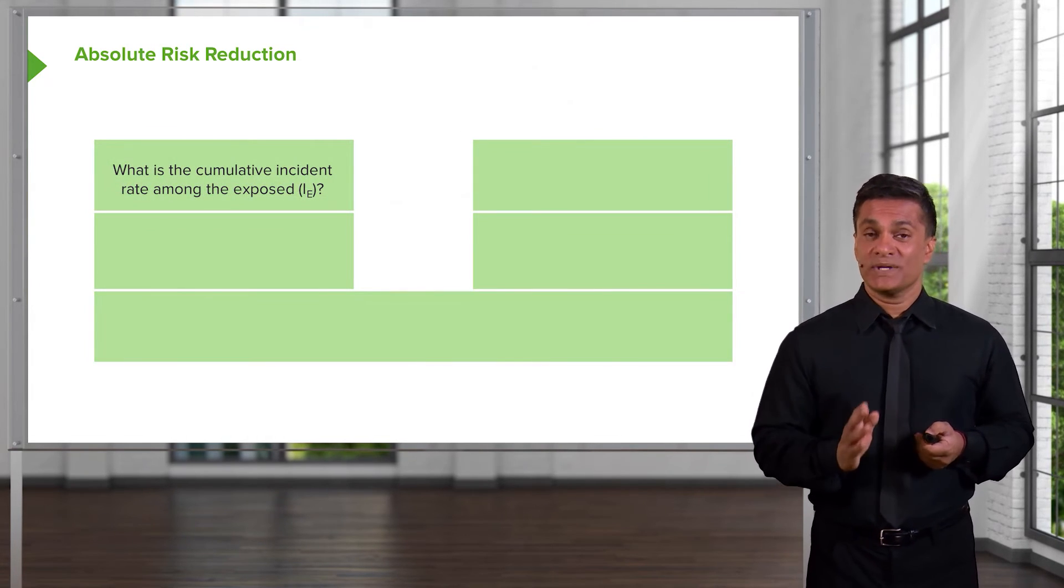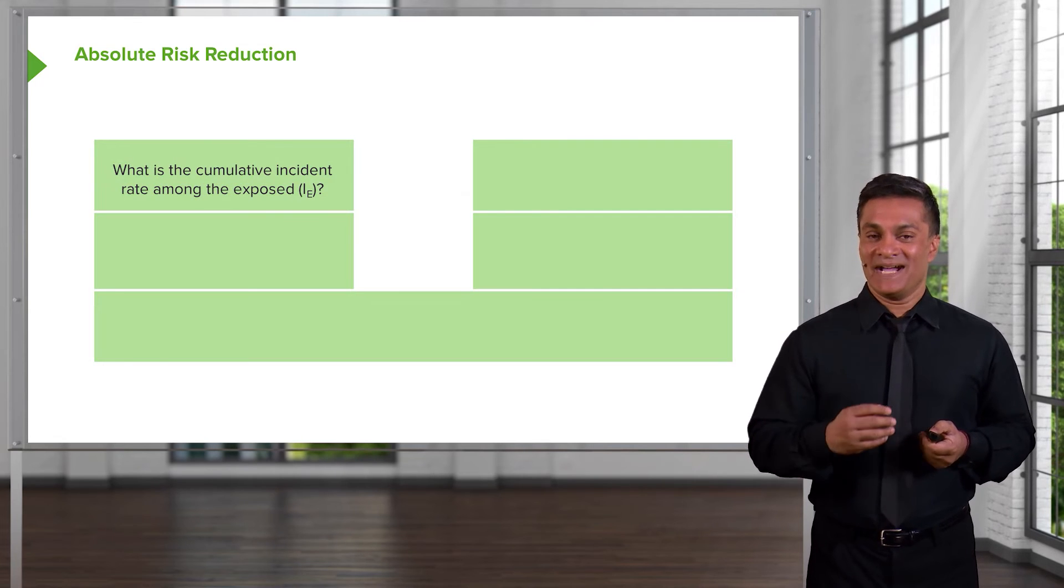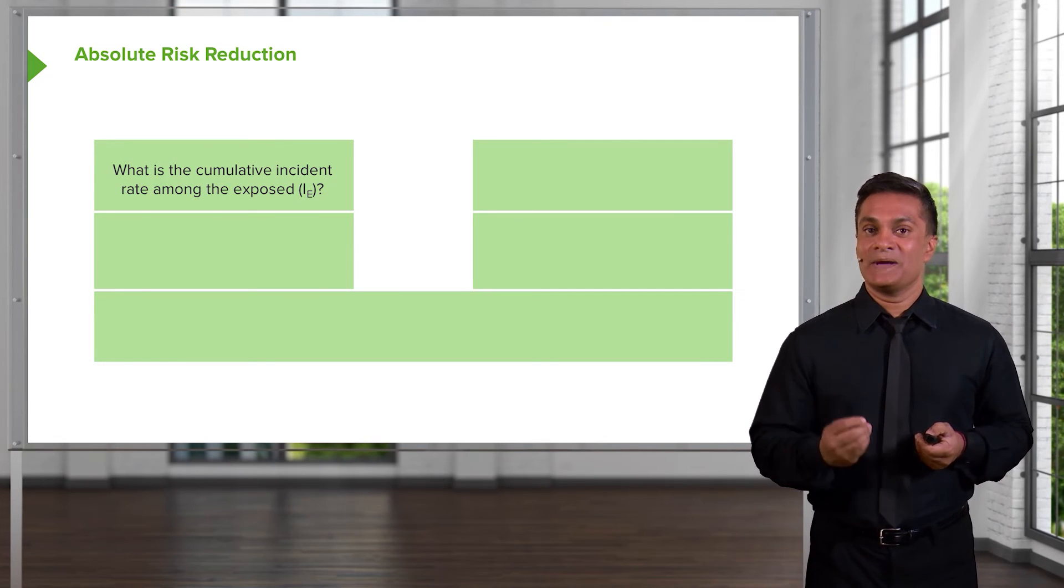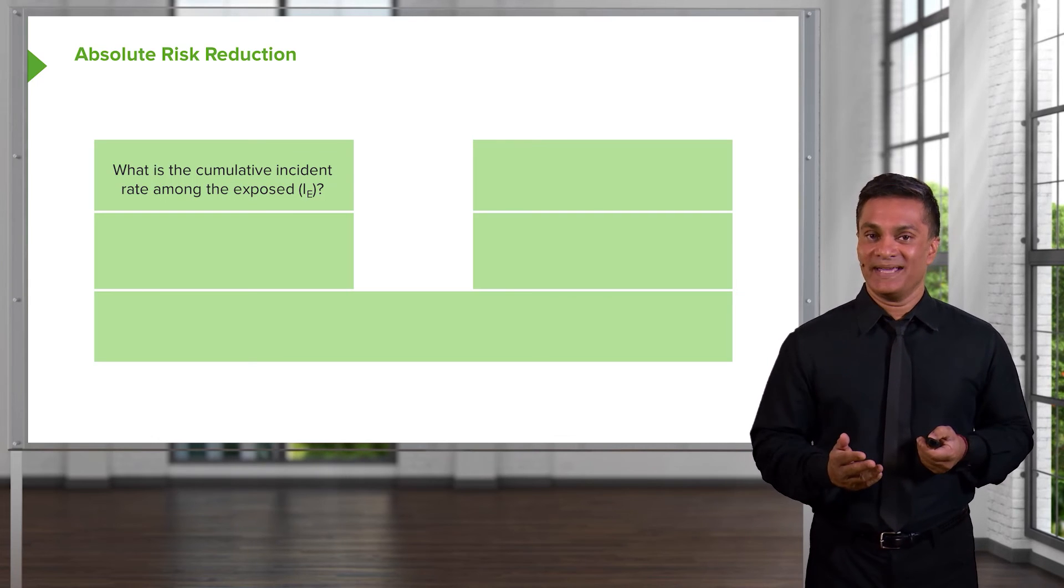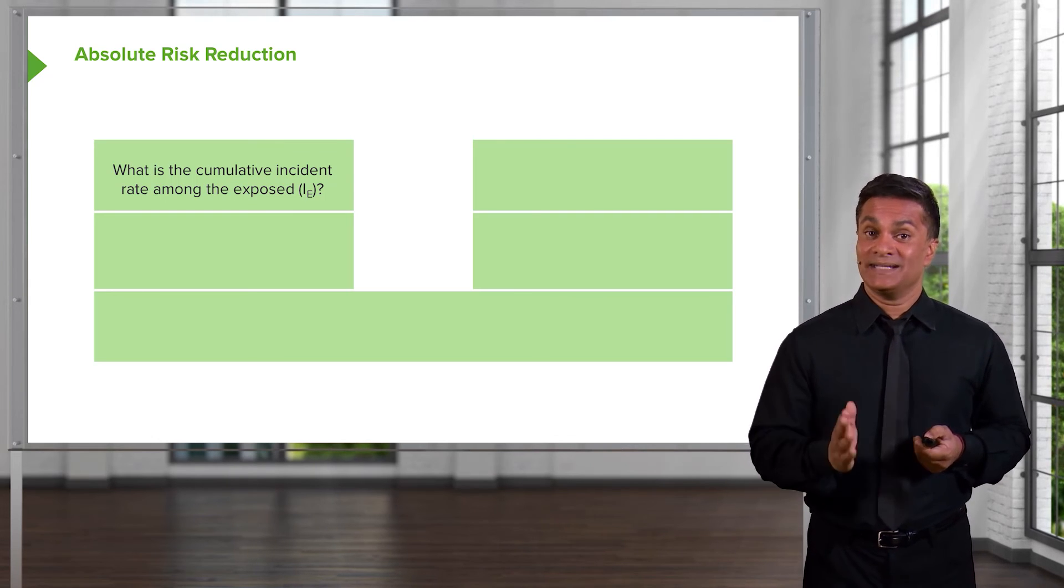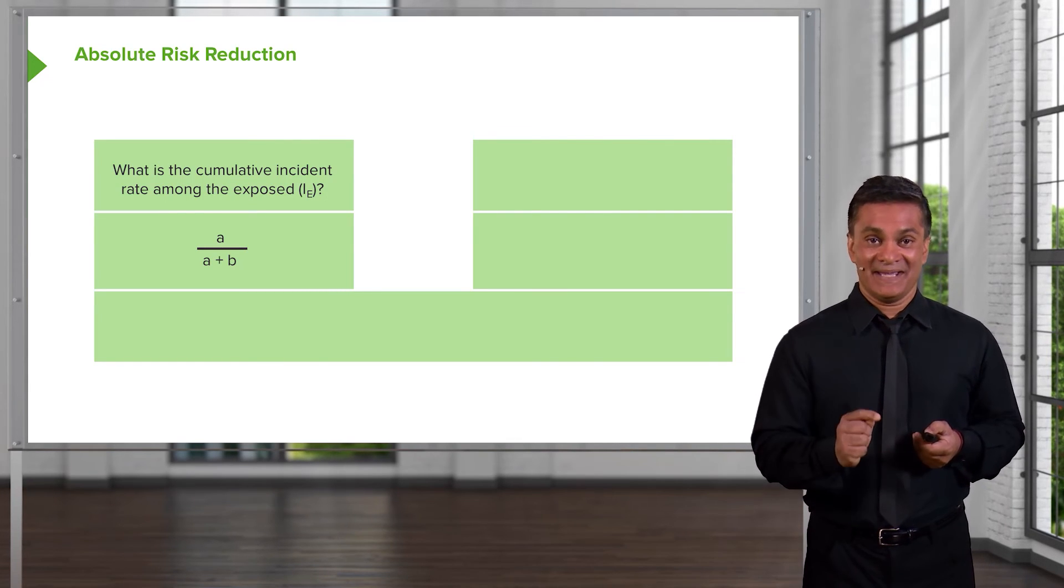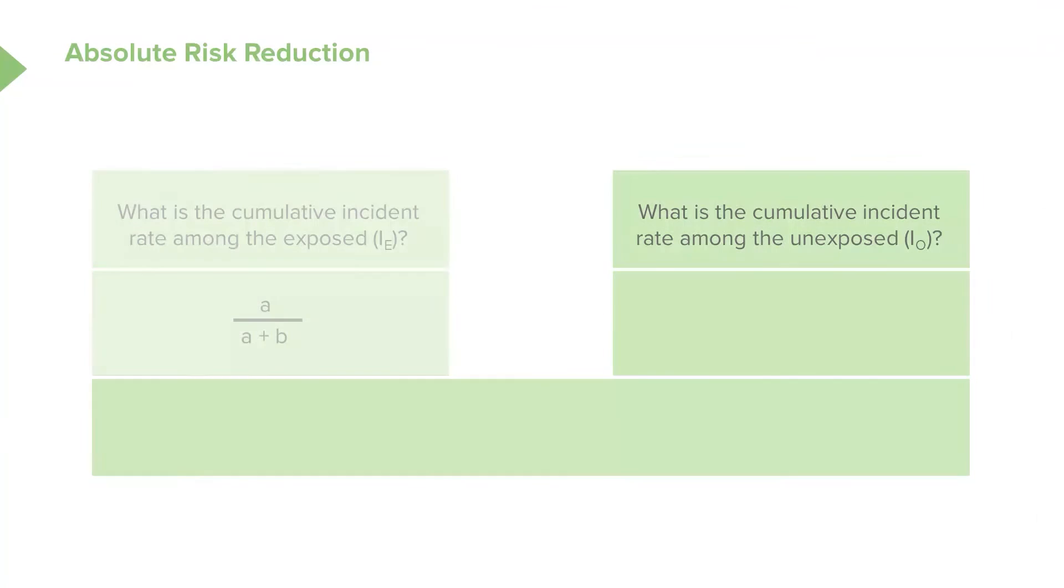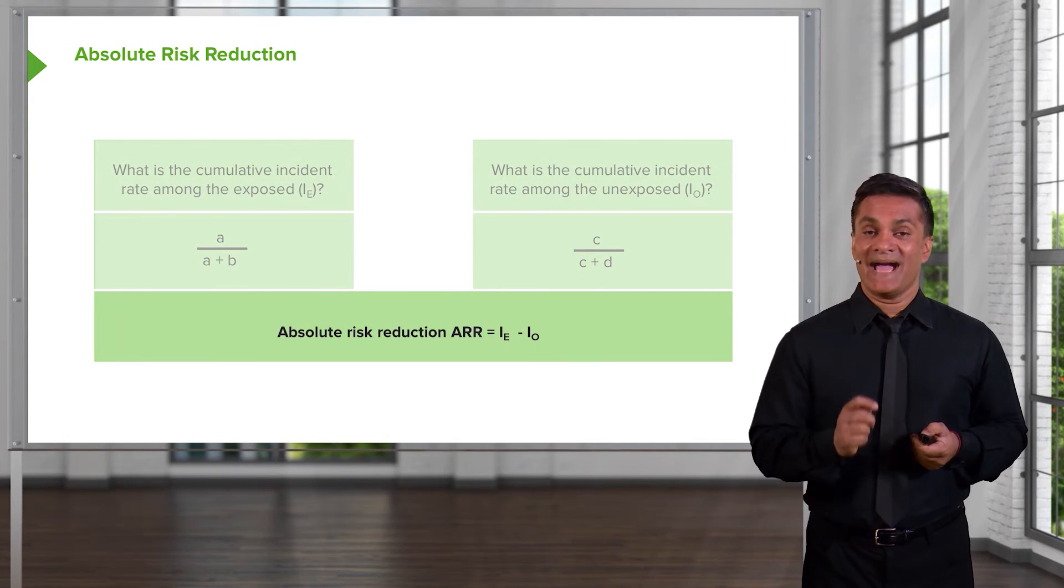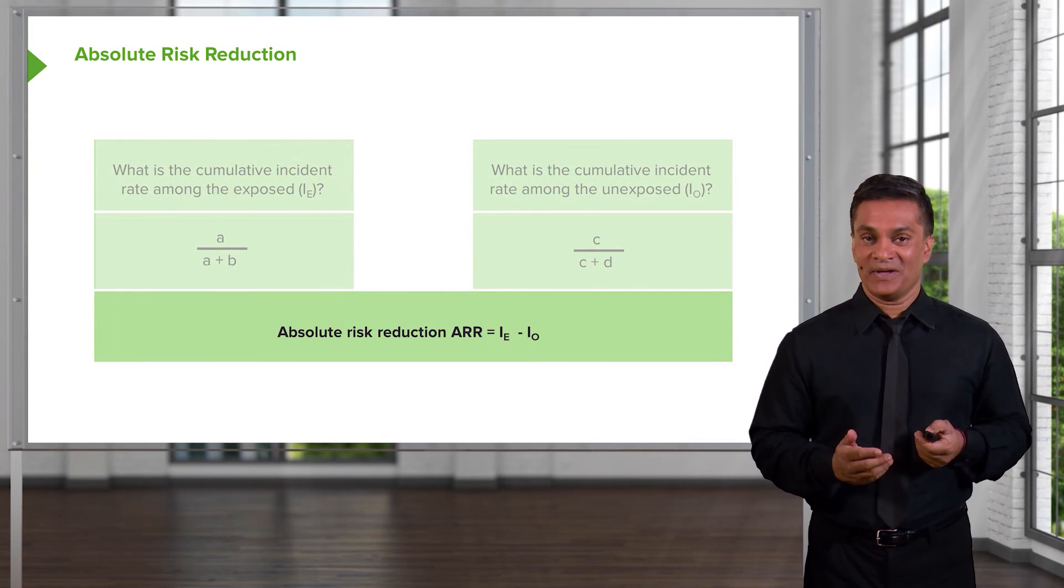Now, let's talk about the absolute risk reduction. That's how much my chances of having the outcome changed by not doing the exposure. My chances of getting lung cancer, how much did that reduce or increase when I didn't smoke? Again, the cumulative incidence rate amongst the exposed group, A over A plus B. That's my absolute risk in my exposed group. The absolute risk in the unexposed group, once again, C over C plus D. The difference between the two, that's my absolute risk reduction. How much risk I had from being exposed to smoking minus how much risk I had when I didn't smoke. That difference tells me a lot. It tells me how much I have gained in terms of health by not doing that behavior.